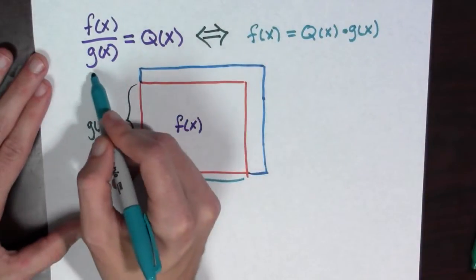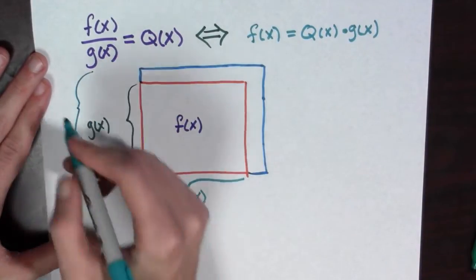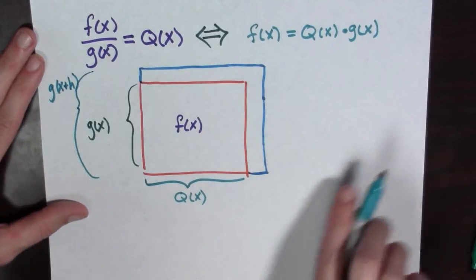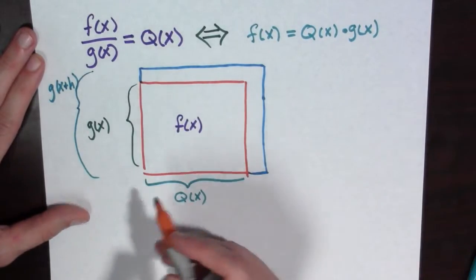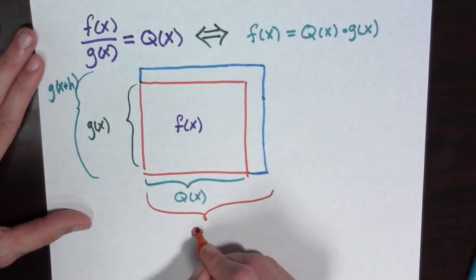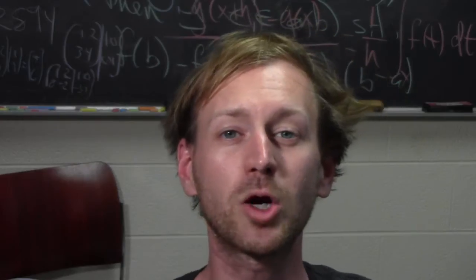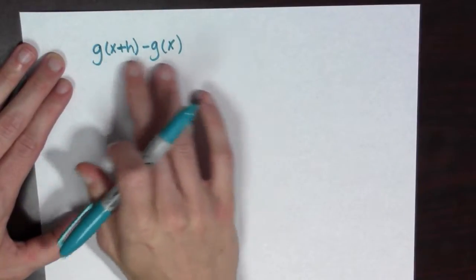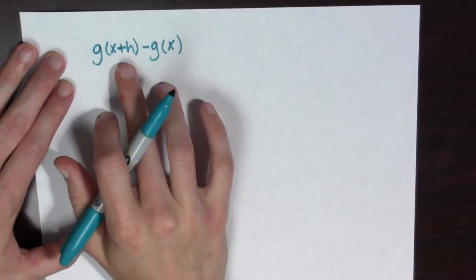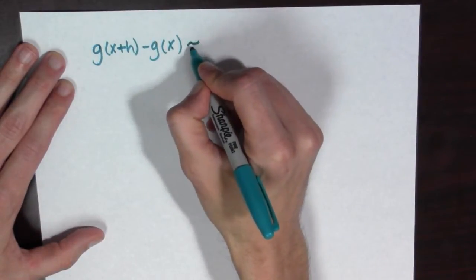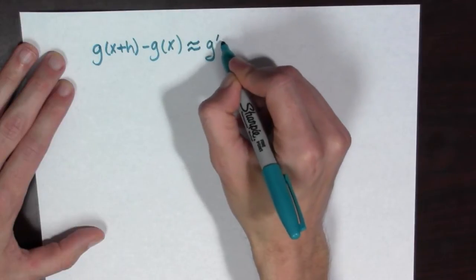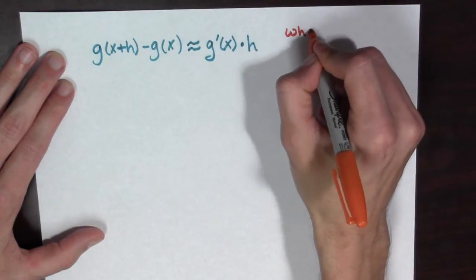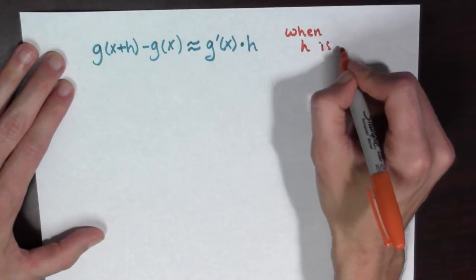This is going to be a new quantity. It's going to be g of x plus h down here, and q of x plus h. Here we need a little trick. g of x plus h minus g of x is approximately g prime of x times h when h is small.